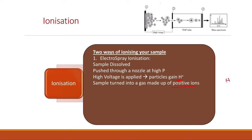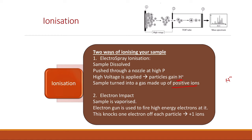The positive ions will all carry the hydrogen ion. The second type of ionization is called electron impact. In electron impact, the sample is vaporized and an electron gun is used to fire high-energy electrons at the particles. These electrons knock off one electron from each particle, so the particles now have a positive charge because they lack one electron — but they do not gain a hydrogen ion.